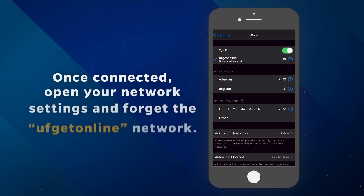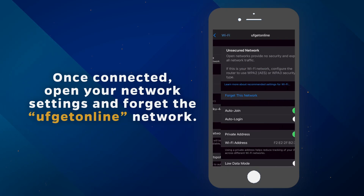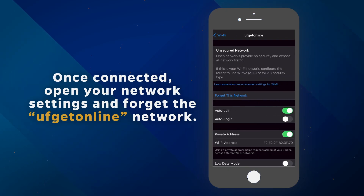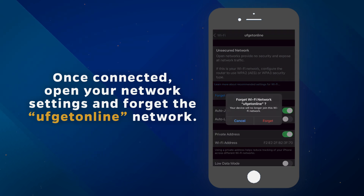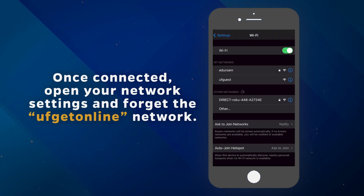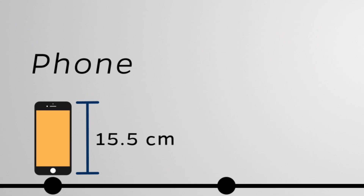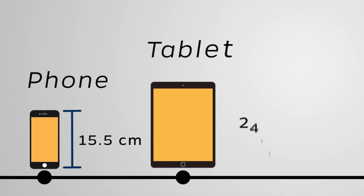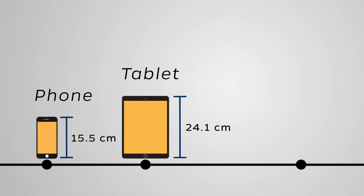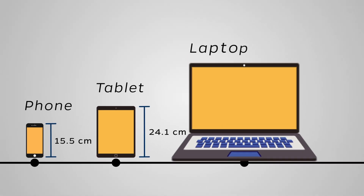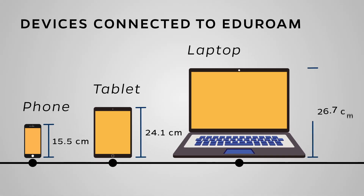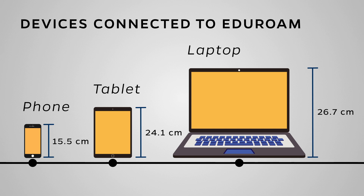Step 5: Once connected, open your network settings again and forget the UF GetOnline network. When you change your GatorLink password, you will need to follow steps 1 through 5 again on each device you have previously connected to Eduroam.